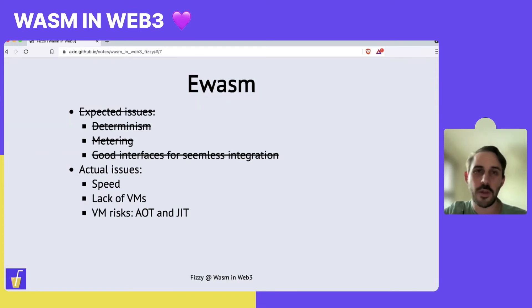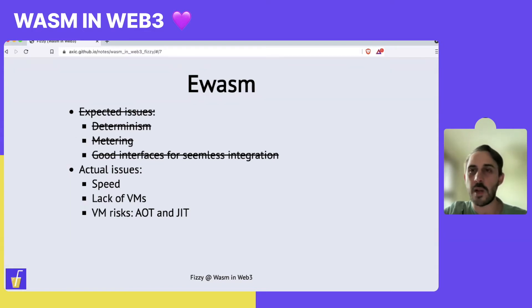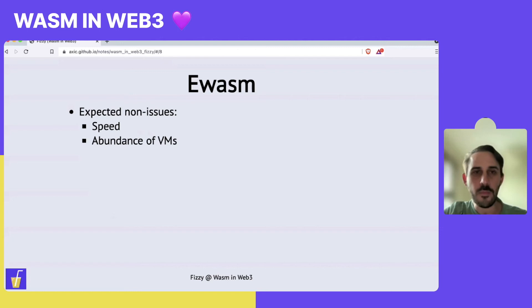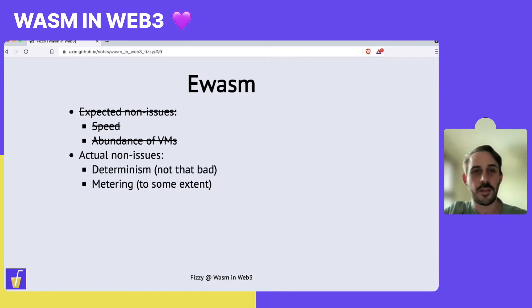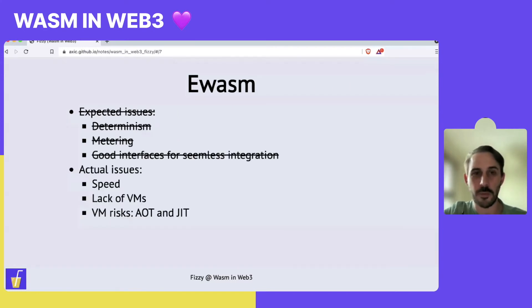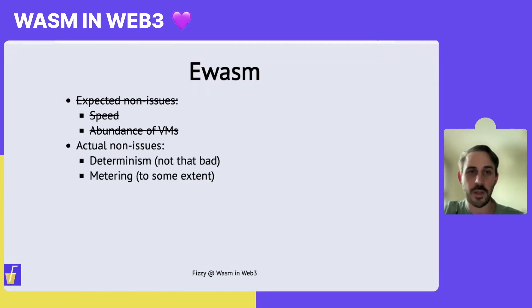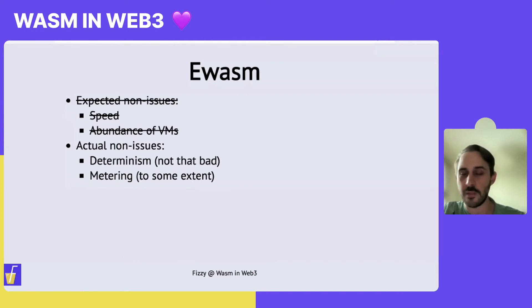More importantly, the lack of choice for VMs was definitely a giant issue. As we learned, these different VMs may have different problems associated with them — especially AOTs and JITs. JITs in particular, we found some issues with. And for the points we hoped there wouldn't be any issues with, what we found instead is that determinism and metering aren't that bad — those can be solved quite easily. It's really just the speed and the VMs which became the problem.